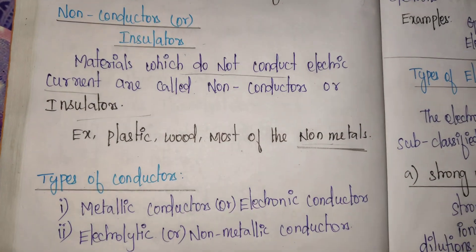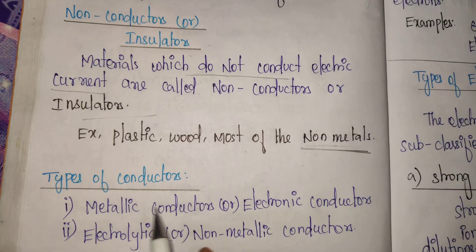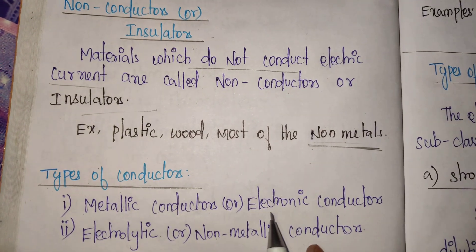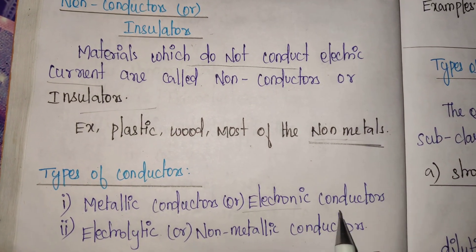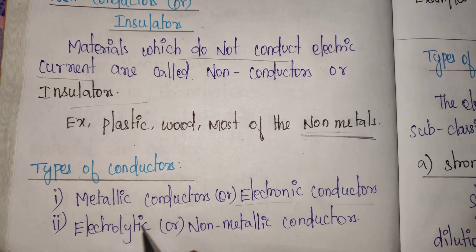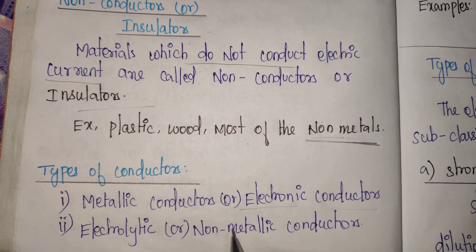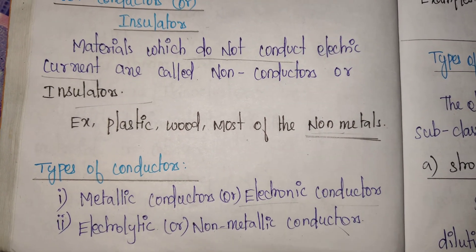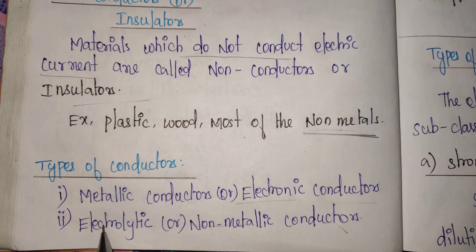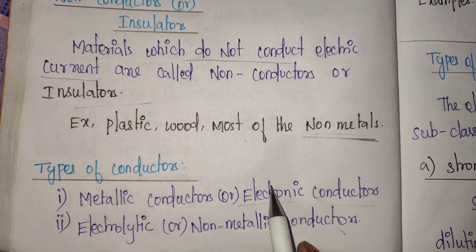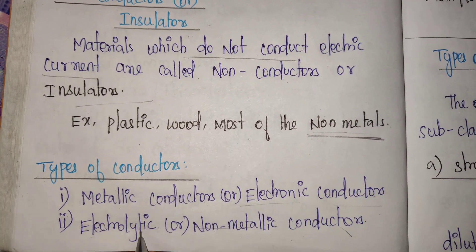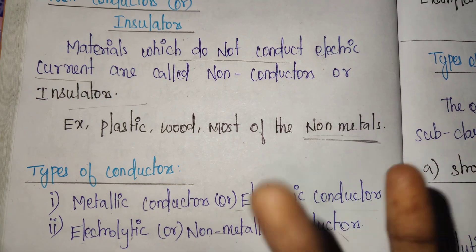Types of conductors: metallic conductors, otherwise called electronic conductors. This is one type. Non-metallic conductors, otherwise called electrolytic conductors. So there are two types: electronic conductors and electrolytic conductors.